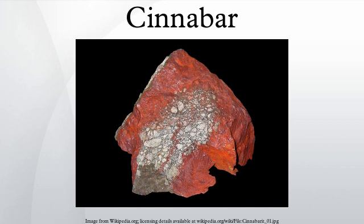Properties. Cinnabar is generally found in a massive, granular or earthy form and is bright scarlet to brick red in color. It occasionally occurs in crystals with a non-metallic adamantine luster. Cinnabar has a rhombohedral Bravais lattice and belongs to the hexagonal crystal system, trigonal division. Its crystals grow usually in a massive habit, though they are sometimes twinned.